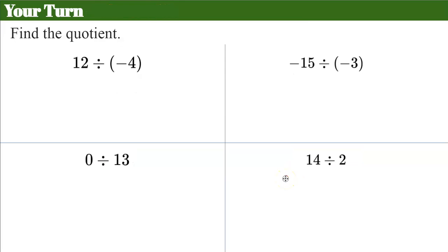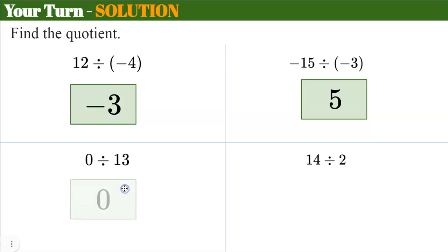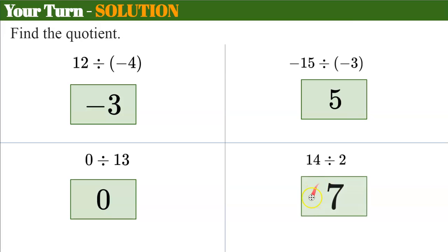Now I'm going to ask you to try four problems. Remember what we've learned today; if you need to rewind the video, go ahead. Pause, find these four quotients, and come back when you're done. Welcome back. Two different signs, positive divided by a negative: 12 divided by negative 4 is negative 3. Same sign, positive quotient: 15 divided by 3 is 5. Negative 15 divided by negative 3 is also 5. Zero divided by 13 is 0. 14 divided by 2, same sign, positive quotient: 7.